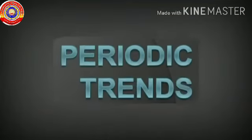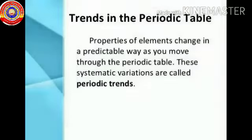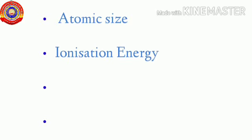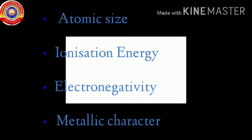Trends means changes. So in the periodic table, properties of elements will undergo some variations if we move across a period and down in a group. So let's learn how the factors — atomic size, ionization energy, electronegativity, and metallic character — vary across a period and down a group.